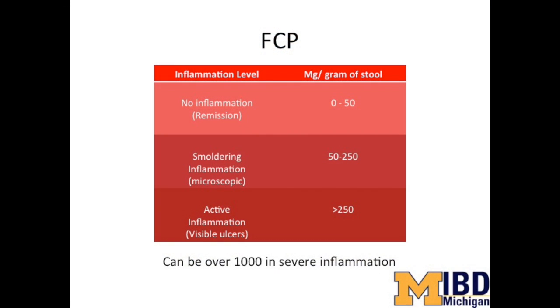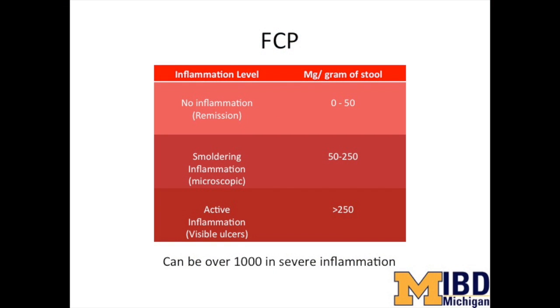What levels of fecal calprotectin are you looking for in your results? The fecal calprotectin is measured in milligrams per gram of stool, and can vary by 150 points from one bowel movement to another. A very good calprotectin is between zero and 50, which is generally considered no inflammation or remission. A calprotectin between 50 and 250 is considered smoldering inflammation.